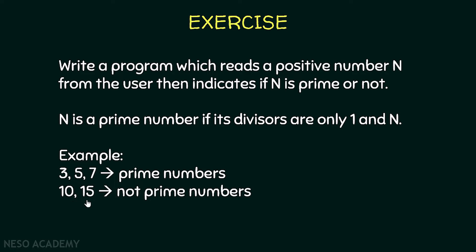Another example: 10 and 15 are not prime numbers. The number 10 has divisors other than 1 and 10 — for example, 5 is a divisor of 10. The same goes for the number 15; it has divisors other than 1 and 15 — for example, 3 is a divisor of 15. So our program should take a number from the user and indicate if this number is a prime number or not.